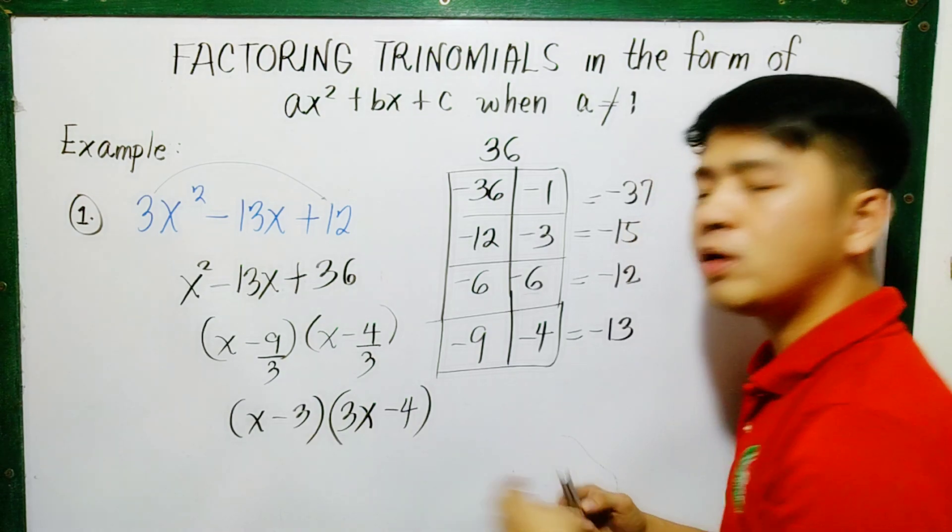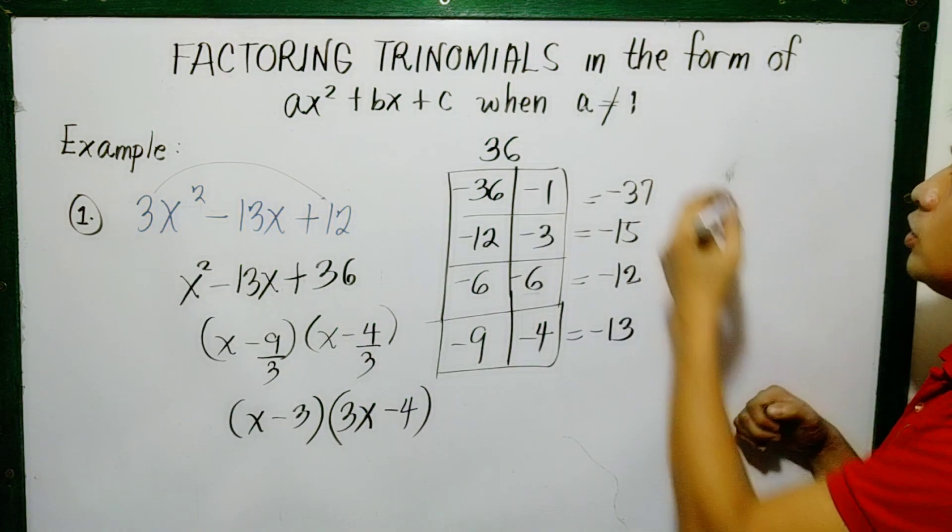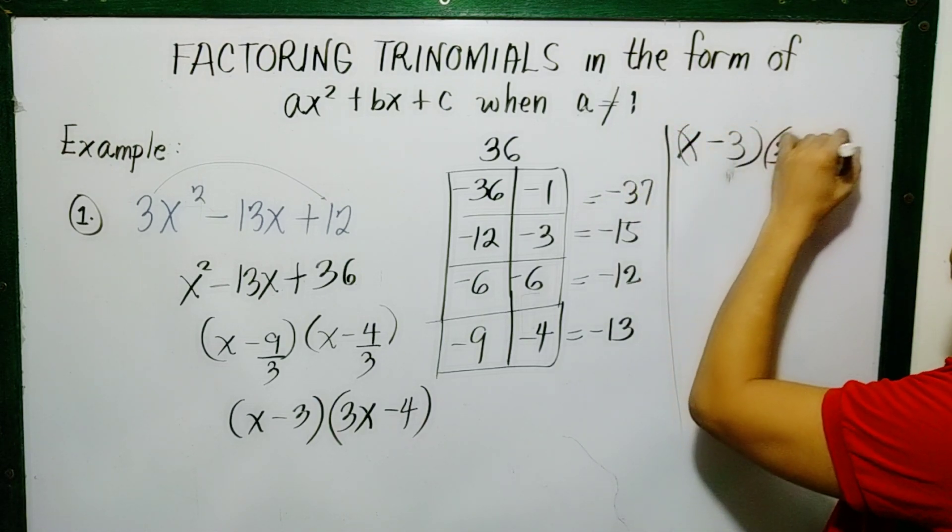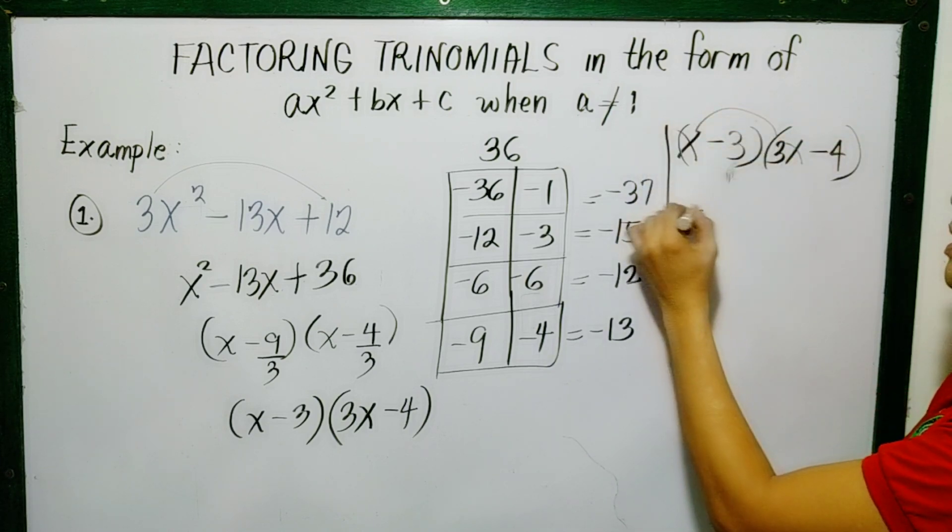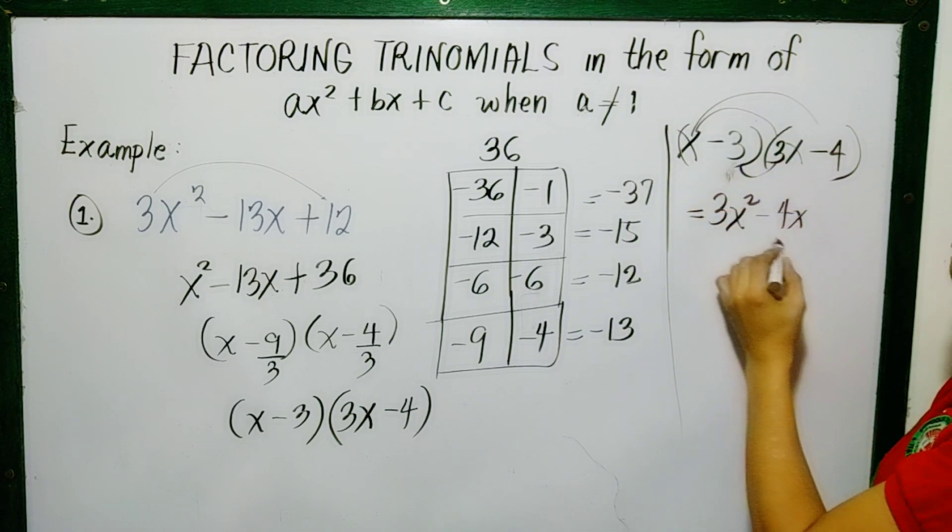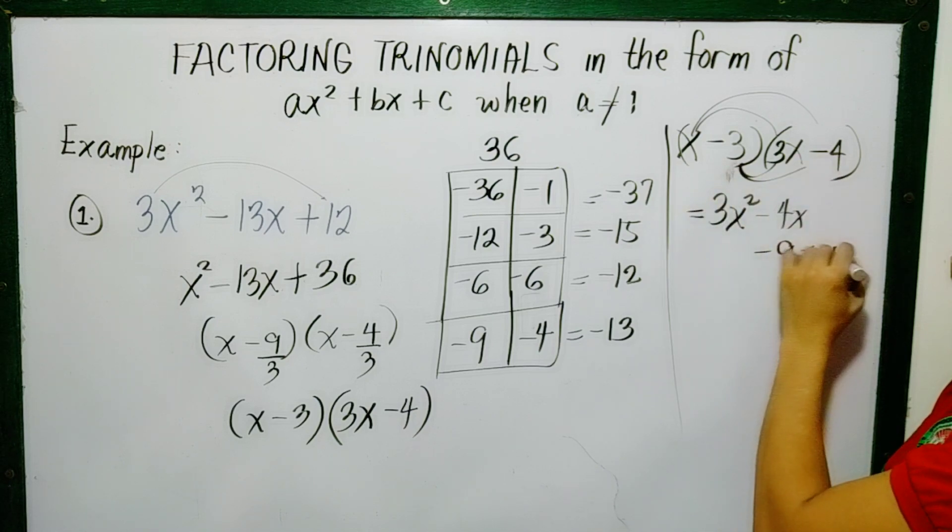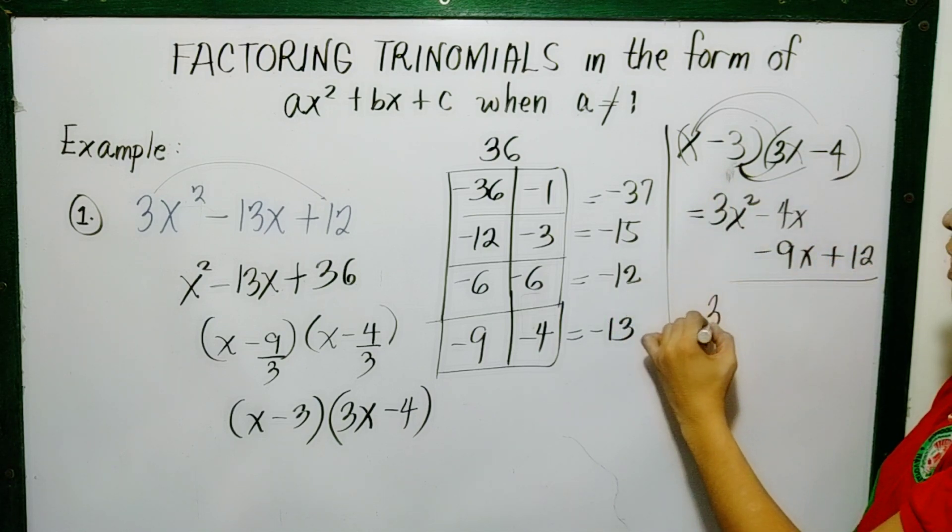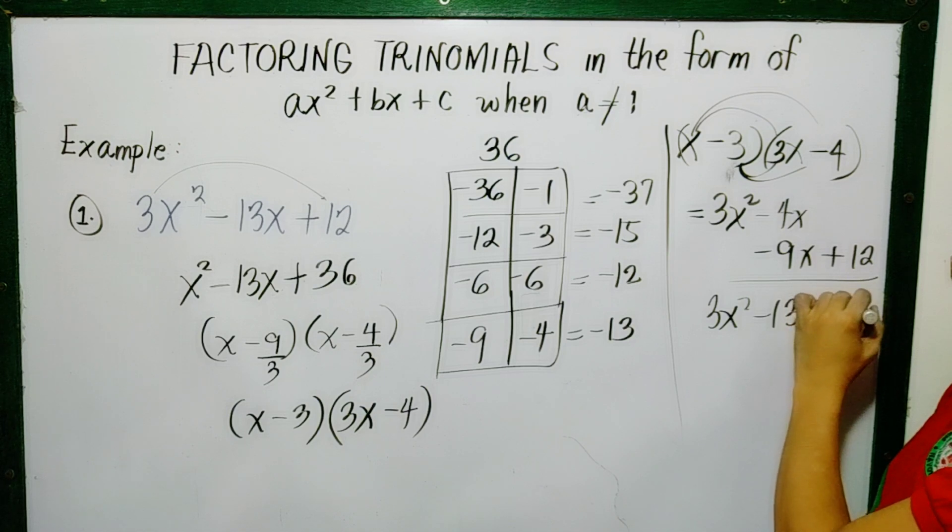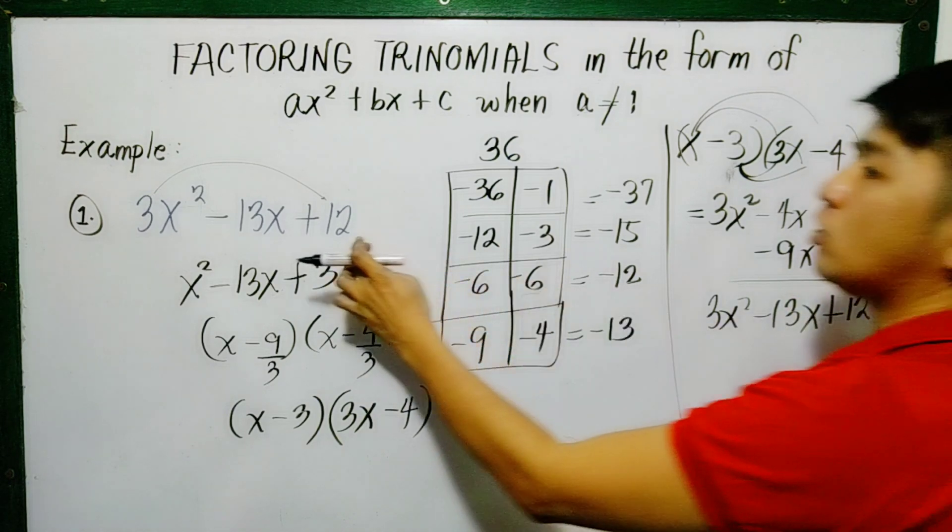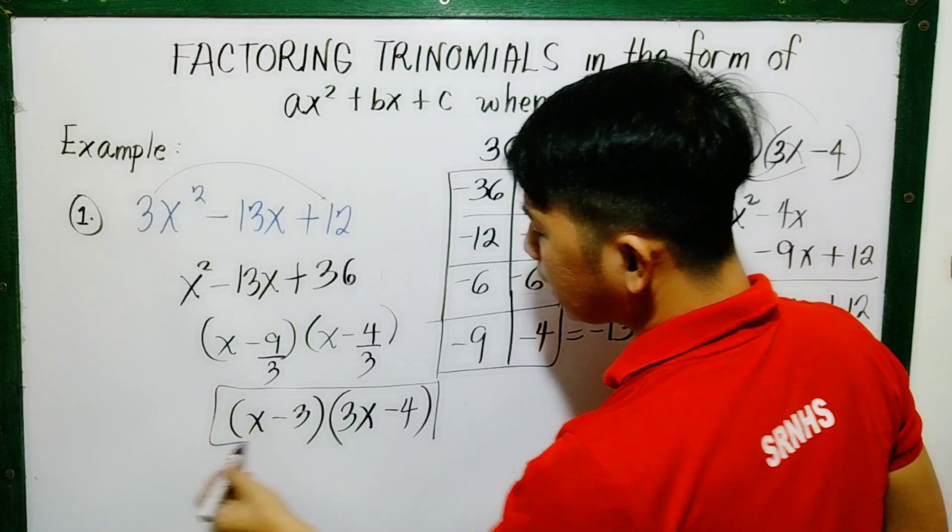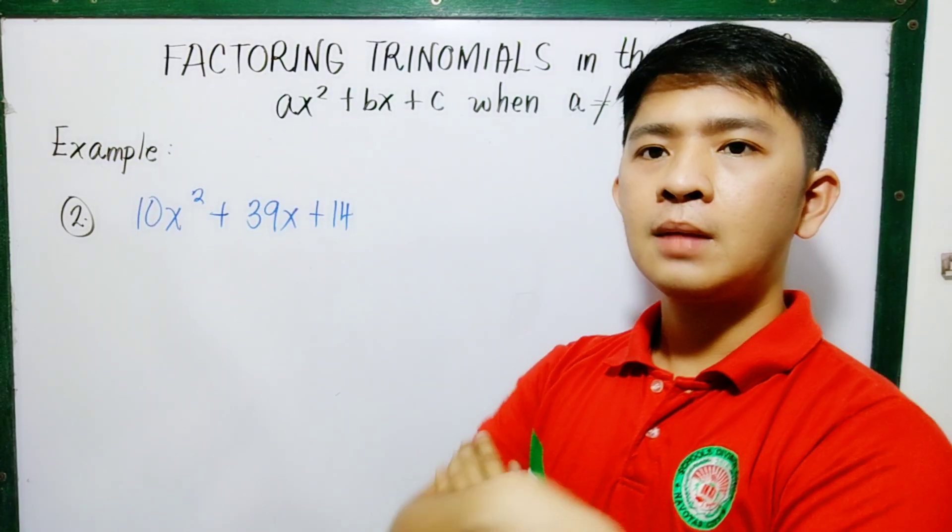If you still have doubts, let's do the FOIL method. We'll FOIL method this. So what's that? x minus 3 multiply by 3x minus 4. So multiply by FOIL method, that would be 3x squared. This is negative 4x. This is negative 9x. And this is positive 12. So bring down 3x squared. We can combine these. That is negative 13x. Bring down 12. So is this the same as this? Yes they're the same. So that means, these are now its factors: x minus 3 and 3x minus 4.